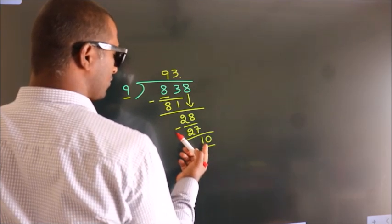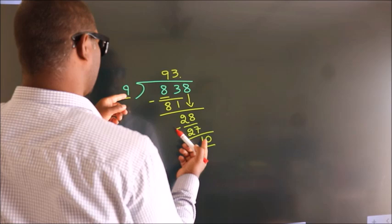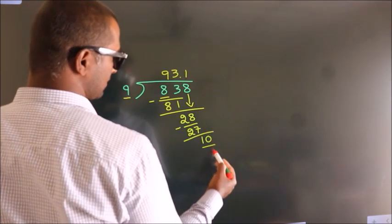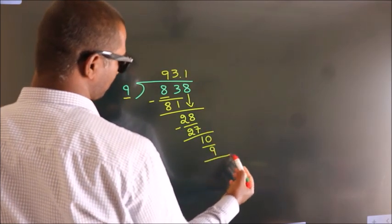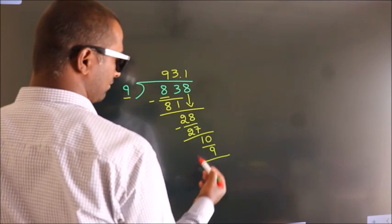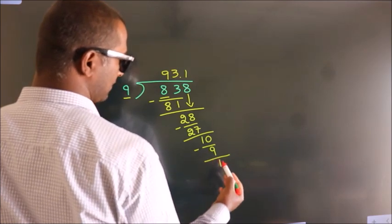A number close to 10 in the 9 table is 9 times 1 equals 9. Now we subtract, we get 1.